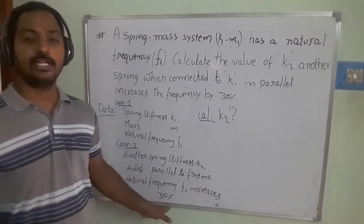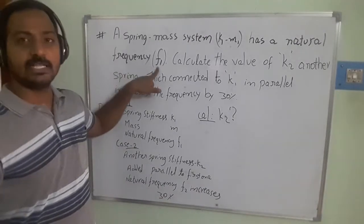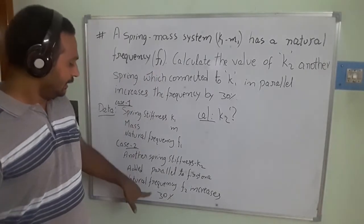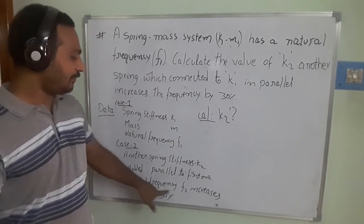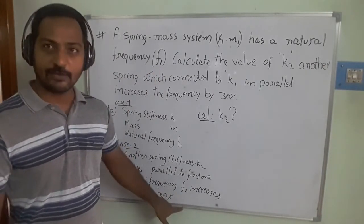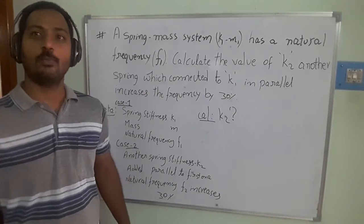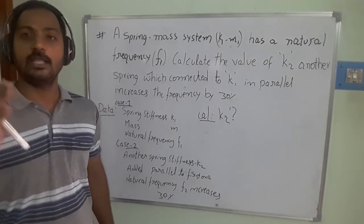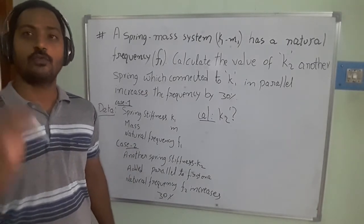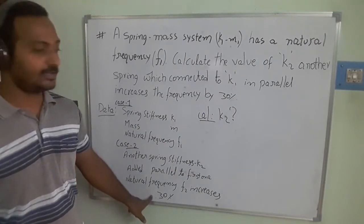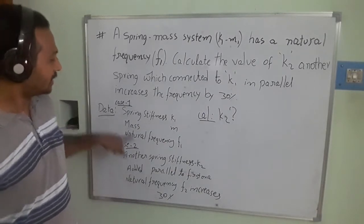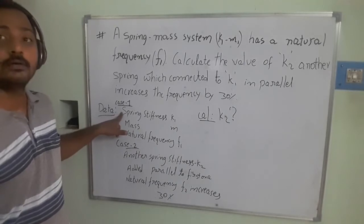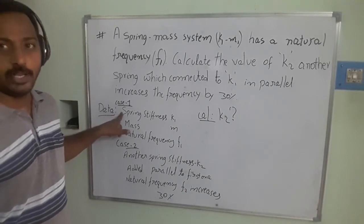The meaning of the 30% increase is: f1 is the initial natural frequency, and f2 is the new natural frequency increased by 30%. So f2 is equal to 1.3 times f1.